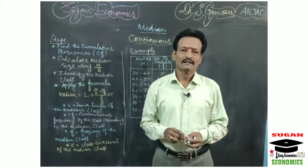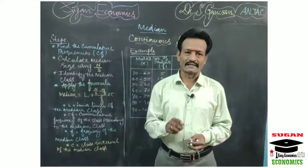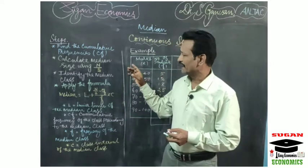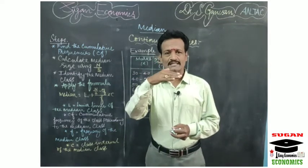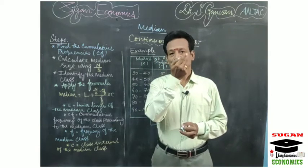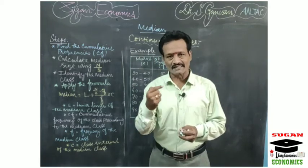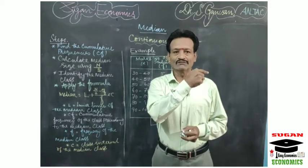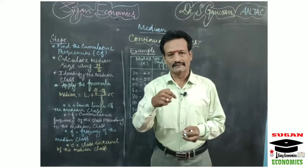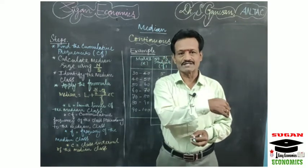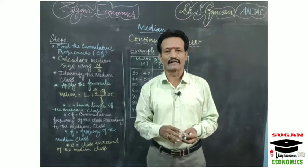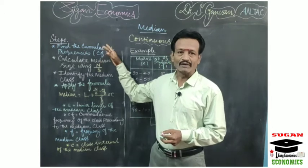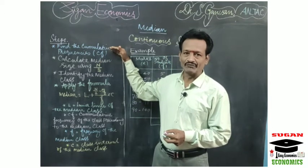At the time of explaining calculation of median for discrete series, I explained how to calculate the cumulative frequencies. Here, the first frequency is taken as the first cumulative frequency. Then the first cumulative frequency should be added with the second frequency to get the second cumulative frequency. Then from the second cumulative frequency, you add the third frequency to get the third cumulative frequency. In this order, we have to calculate the cumulative frequencies.